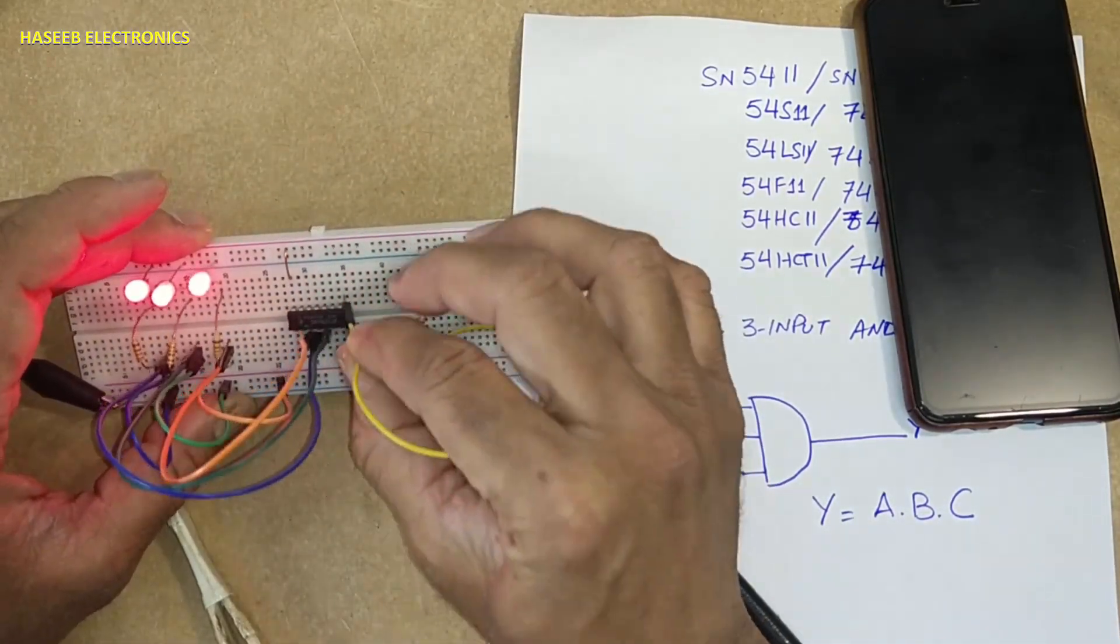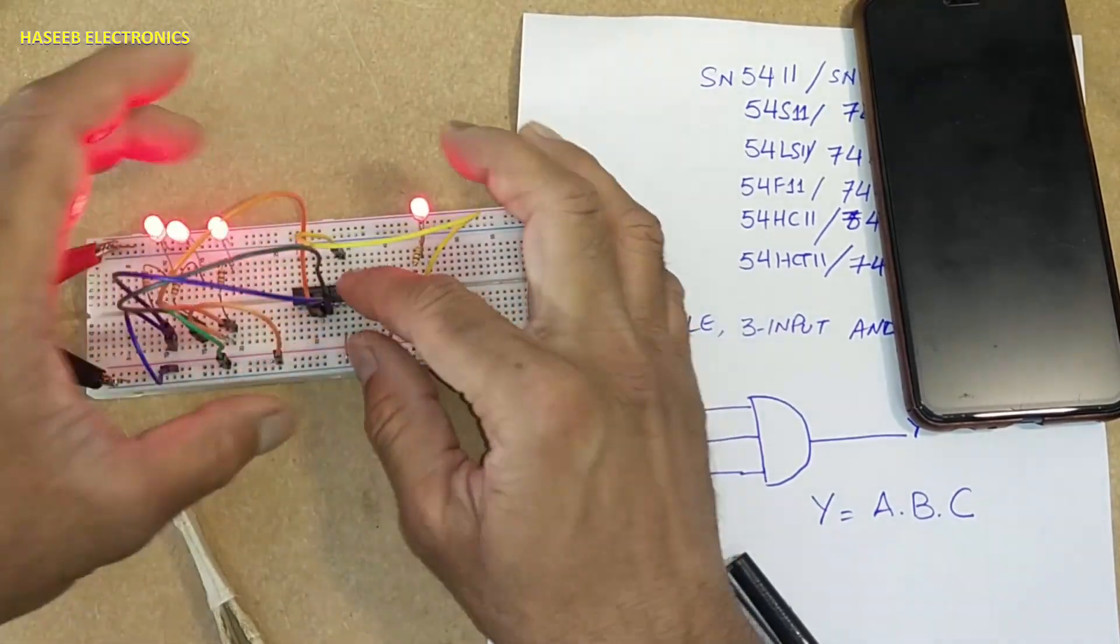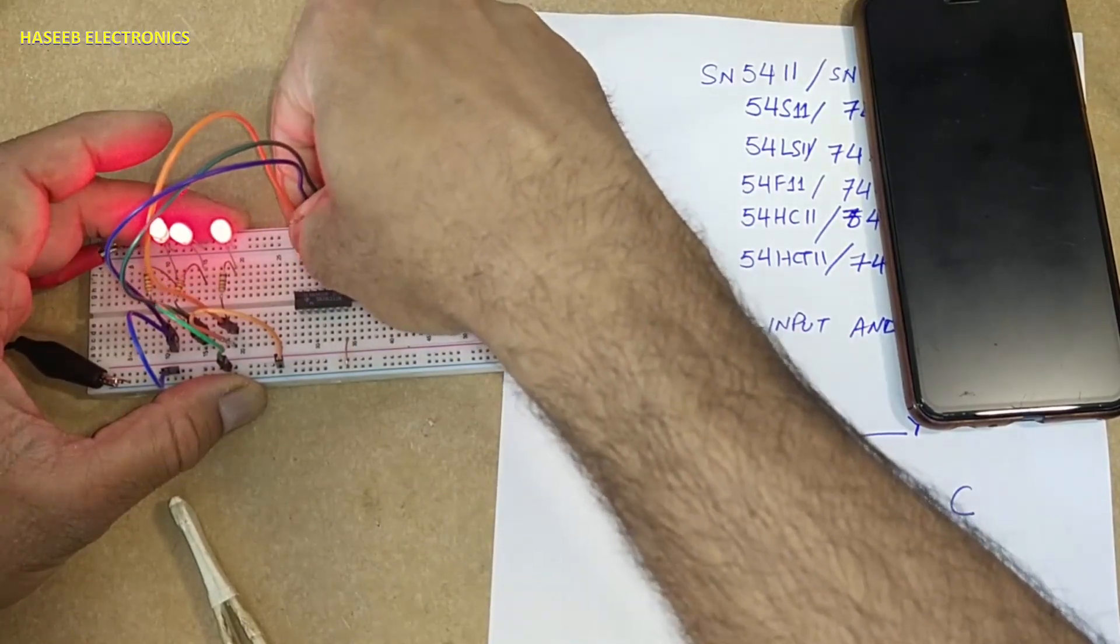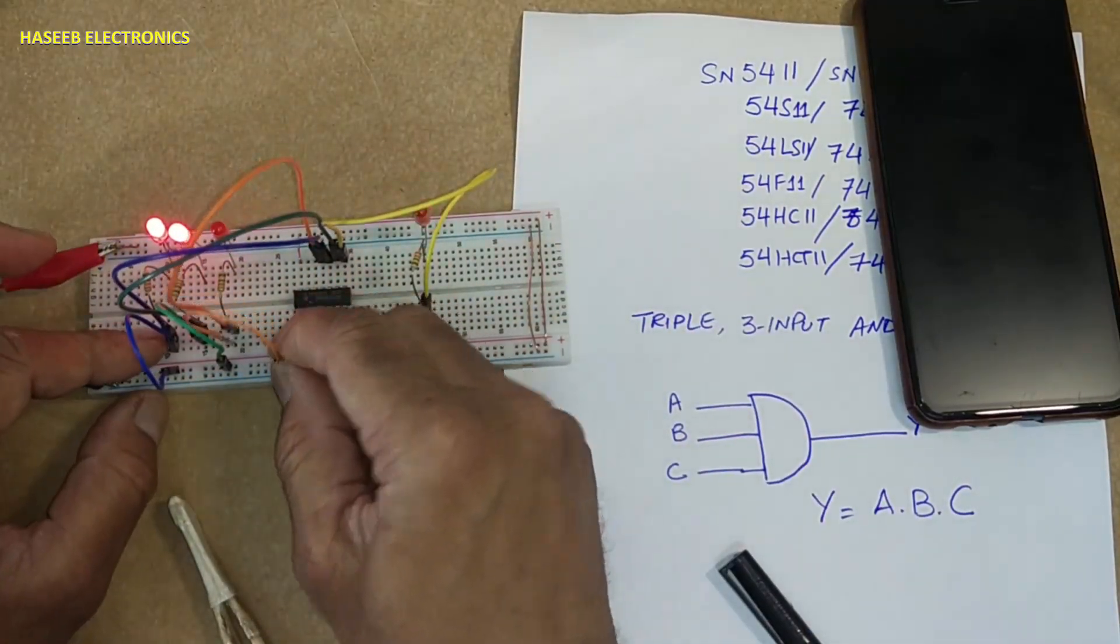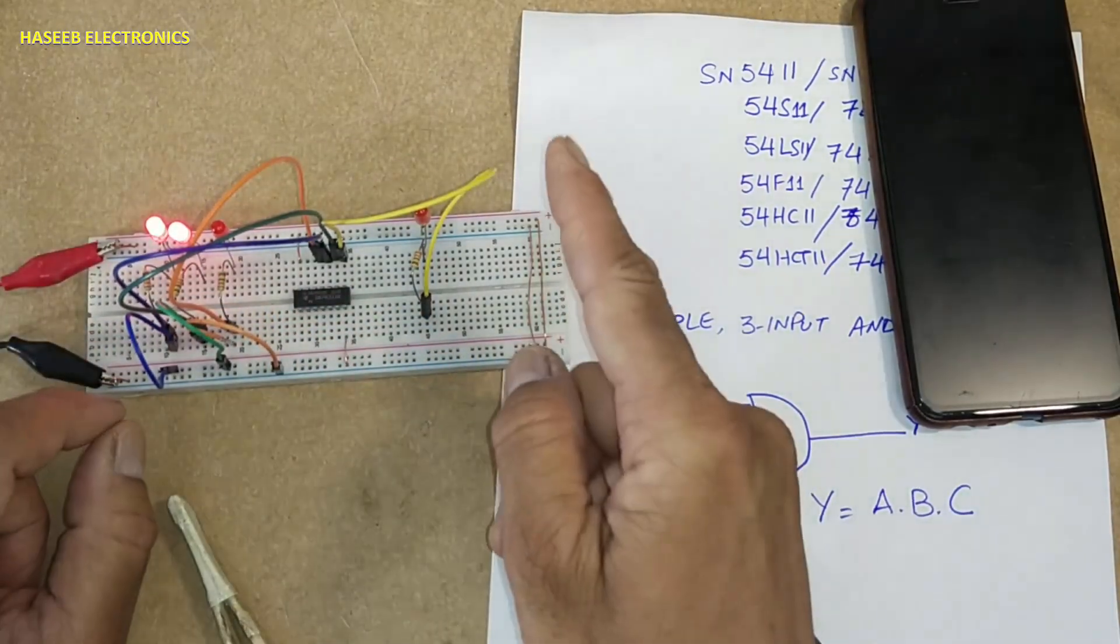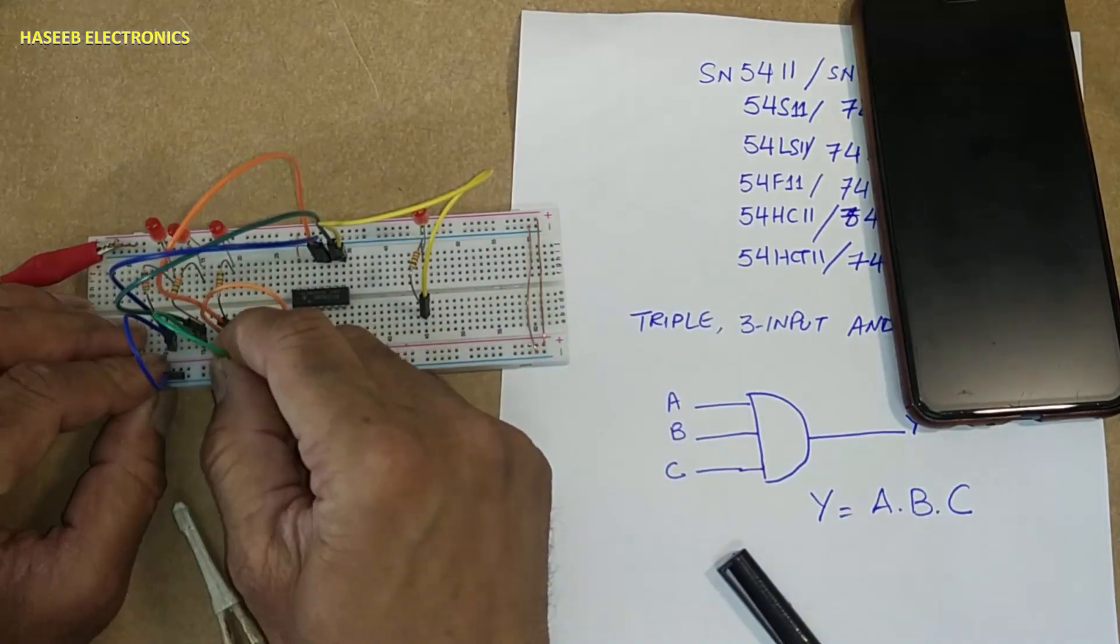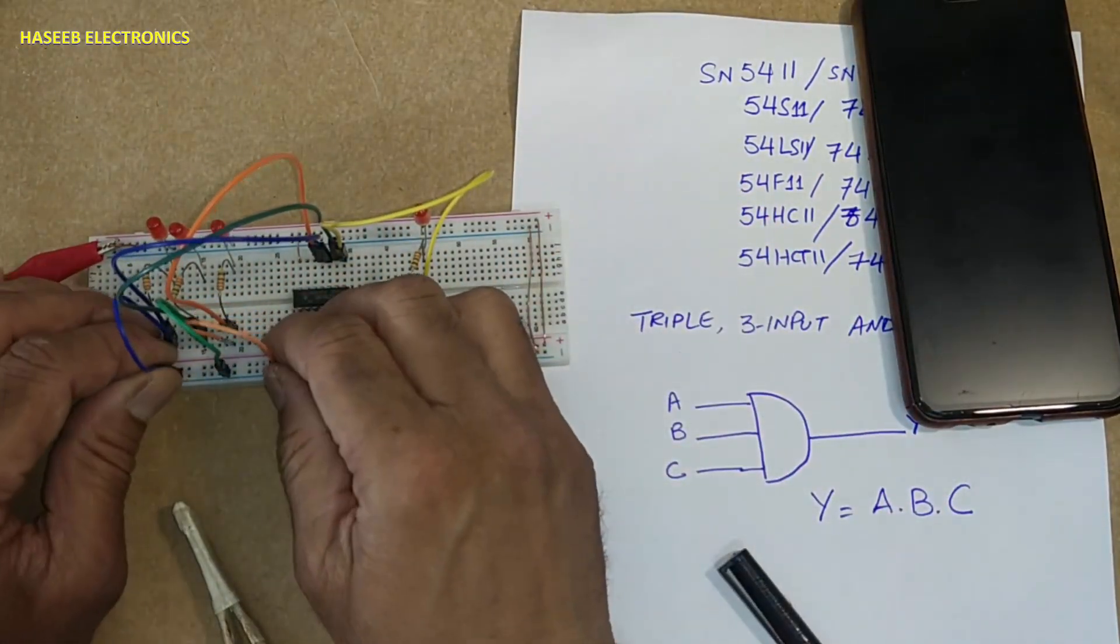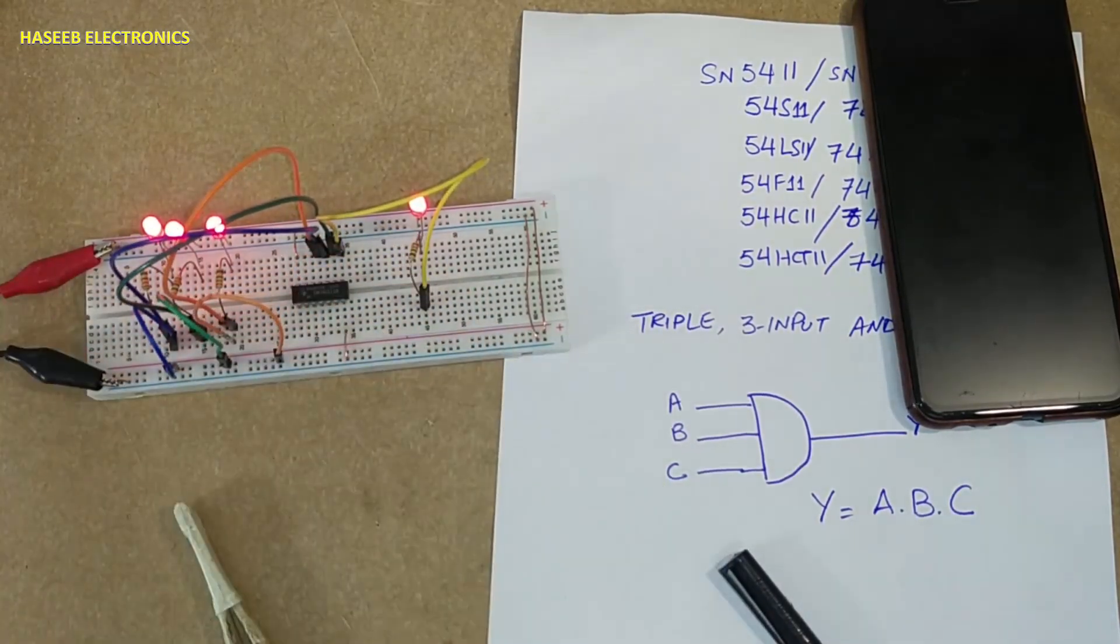Pin number 8 output. Nine, ten, eleven input. Same way, if any input is low, output is low. Two inputs low, low. All inputs are low, output low. The condition is that all inputs must be high, then the output will be high.